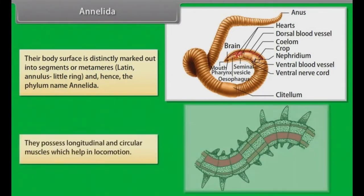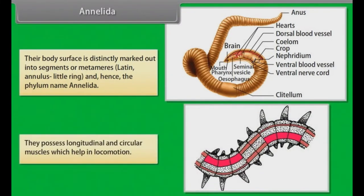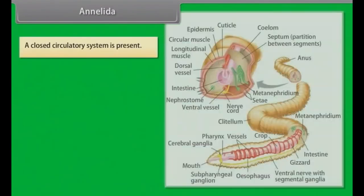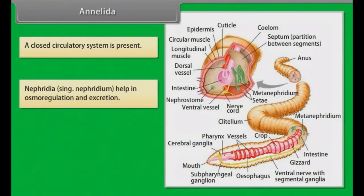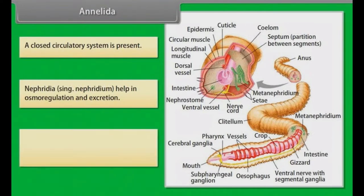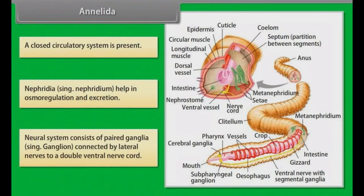They possess longitudinal and circular muscles which help in locomotion. A closed circulatory system is present. Nephridia (singular: Nephridium) help in osmoregulation and excretion. The neural system consists of paired ganglia (singular: ganglion) connected by bilateral nerves to a double ventral nerve cord.